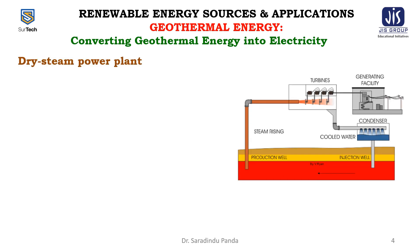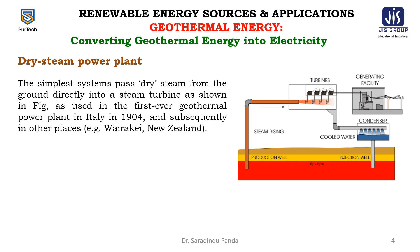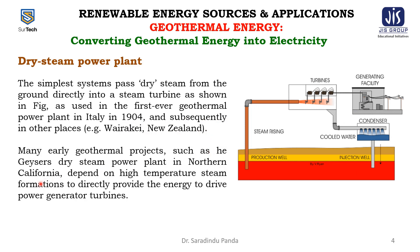The first type is the dry steam power plant. The simplest systems use dry steam from the ground directly into a steam turbine, as shown in the figure. This was first used in the first ever geothermal power plant in Italy in 1904, and subsequently in other places like Wairakei, New Zealand. Many early geothermal projects, such as the Geyser's dry steam power plant in Northern California, depend on high-temperature steam formations to directly drive the power generator.